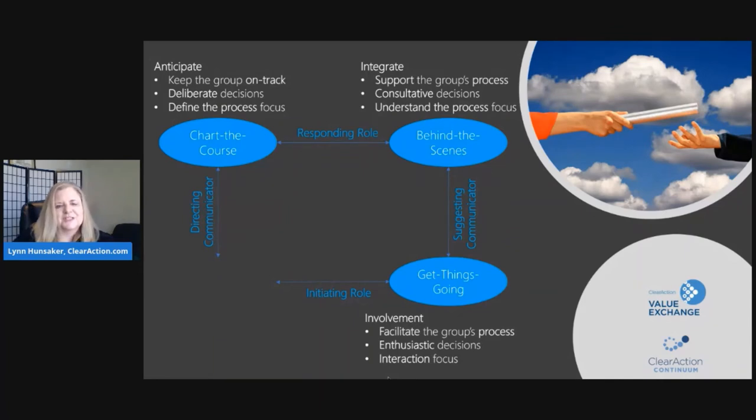The combination of suggesting and initiating is called get-things-going interaction style. Your urgent need is to involve, and your aim is to get an embraced result. Your core belief is it's worth the energy to involve everyone and get them to want X. You would say, I have faith that whatever emerges in the interaction will move us forward. You're inclined to facilitate the group's process, and you make enthusiastic decisions. You're focused on interaction, and your natural talent is to facilitate, catalyze, and energize, brainstorm ideas, persuade, discover new ways of seeing things, explore options, and make preparations.